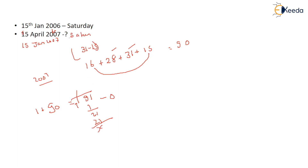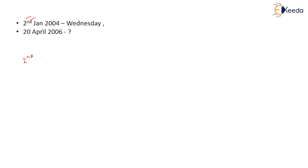Next question: 2 January 2004 is a given day — what is 20 April 2006? Forget about April; consider it as January 2006. Big year minus small year gives 2. Now for leap years: since we start from 2 January 2004, 29 February 2004 will come, so you add 1.